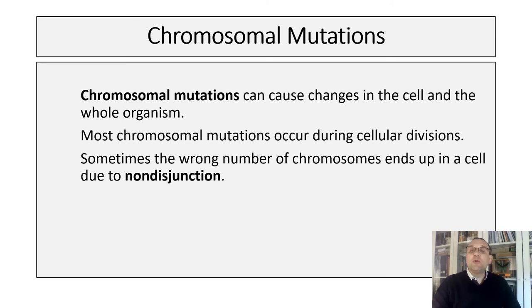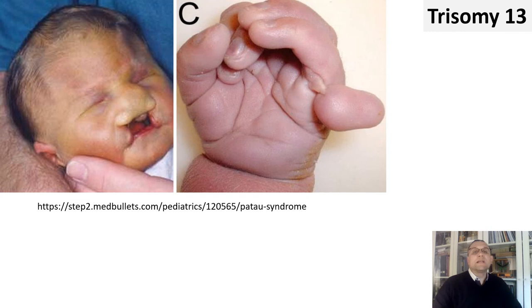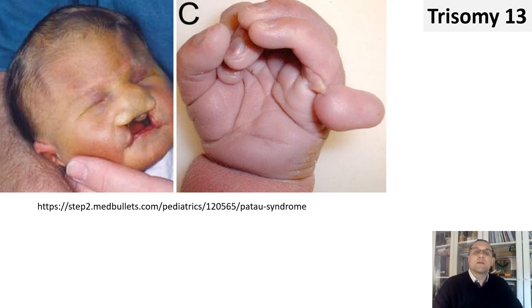On this we finish with gene mutations and now look at chromosomal mutations. Chromosomal mutations can cause changes in the cell and the whole organism. Most chromosomal mutations occur during cellular divisions — sometimes the wrong number of chromosomes end up in the cell due to non-disjunction. During anaphase, one of the sister chromatids is pulled to the wrong side of the cell, ending up with more chromosomes than it should. Trisomy is a condition caused by an extra chromosome in a cell. Trisomy 13, also called Patau syndrome, is a chromosomal condition associated with severe intellectual disability and physical abnormalities — individuals often have heart defects, brain or spinal cord abnormalities, very small or poorly developed eyes, extra fingers or toes, and a cleft lip.